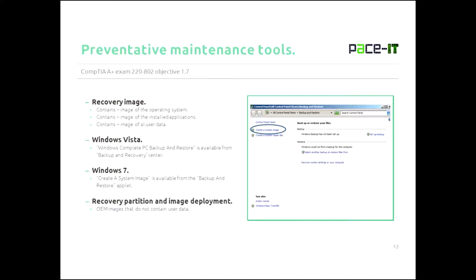In Windows Vista, you create an image using the Windows Complete PC Backup and Restore utility, which is available from the Backup and Recovery Center. In Windows 7, it has a different name — Create a System Image — but it's essentially the same utility, and it is available from the Backup and Restore utility as well. When you create the system image, you get to decide what drives get imaged.